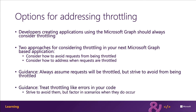One way to think of throttling is like an exception or an error in your code. Developers always strive to avoid errors in their code, but they happen. And there's a reason why the try-catch-finally construct exists. While you should strive to avoid these issues, you should also incorporate the logic in your code that accounts for them when they happen.